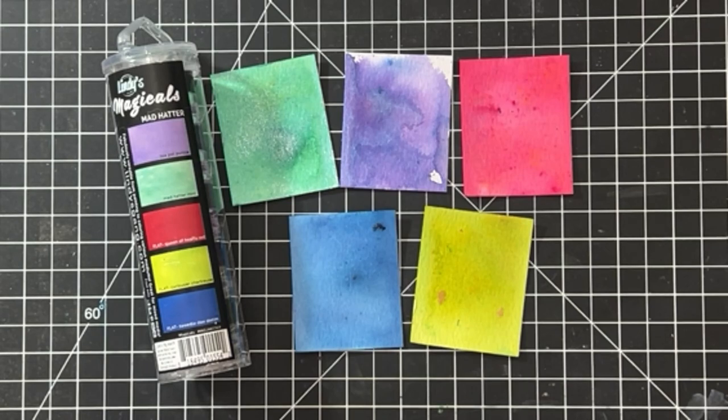These are called Lindy's Magicals. They are a highly pigmented powder and they also have a little bit of mica in them so they shimmer and shine. So these are kind of like a color burst where you add the powder and then spray with water and then they react to water. But these are my favorite because of that extra shimmer and shine.